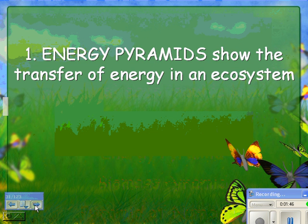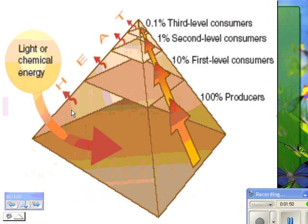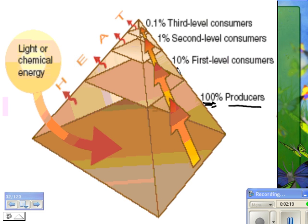An energy pyramid shows the transfer of energy in an ecosystem. If you look at a pyramid, the base is really big and represents the producers. Let's call whatever energy they capture 100% as our baseline. The next level is the first-level consumers — herbivores like rabbits and deer — and only about 10% of the energy makes it to that first trophic level. You lose a lot of that energy as heat. Then you get just 1% at the second level — maybe wolves that eat deer that ate grass.